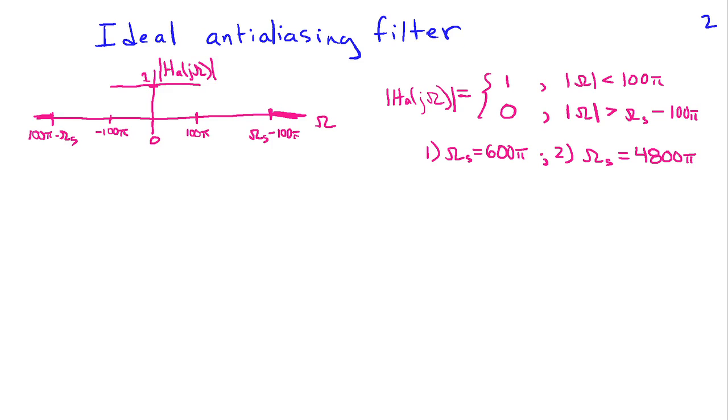Let's look at the anti-aliasing filter first. An ideal anti-aliasing filter, in this case, would have perfect unity response between -100π and 100π radians per second. 50 times 2π is 100π.